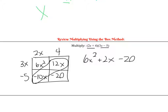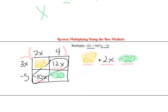The biggest thing I want you to recognize is where each of these pieces are. Notice that 6x squared is at the top left corner, then negative 20 is at the bottom right corner. The numbers that add to 2x are the numbers on the side. So when we do the reverse box, we're going to be plugging in these numbers into the box and trying to figure out what the factors are on the outside.